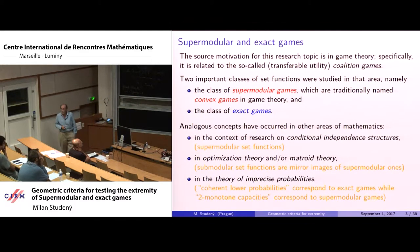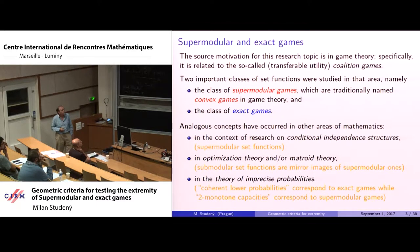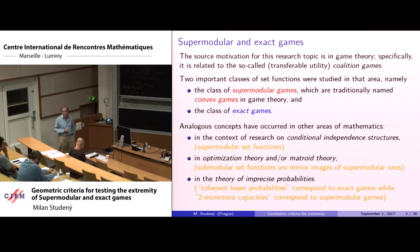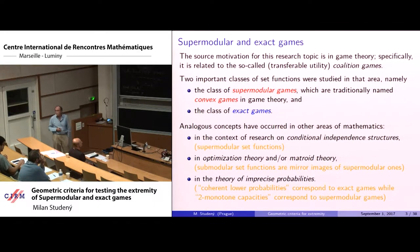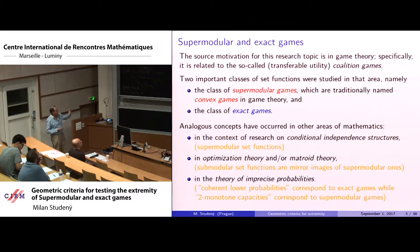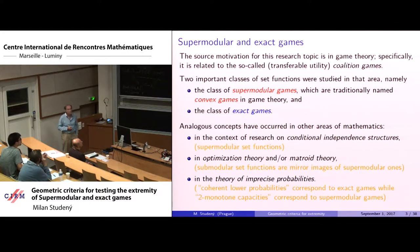The source of motivation lies in game theory, specifically in the subspace called transferable utility coalition games. There are two important classes of set functions studied here: the class of supermodular games, traditionally called convex games in game theory, and the class of exact games. These concepts appeared in several other areas of mathematics, including the context of conditional independence structures where supermodular set functions play an important role.